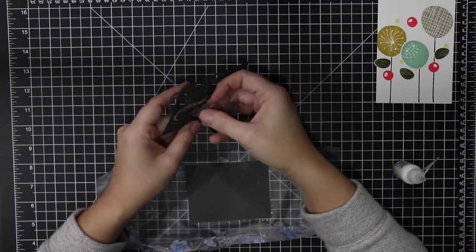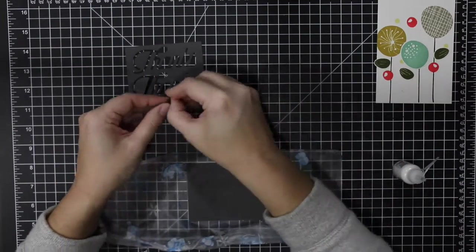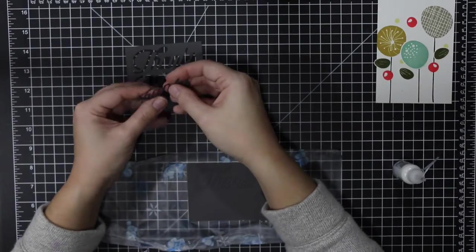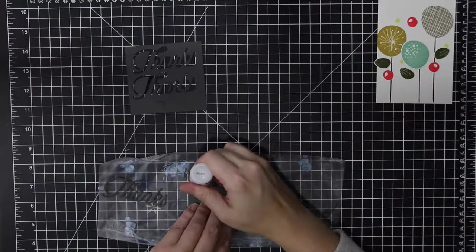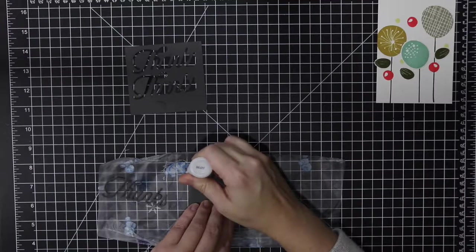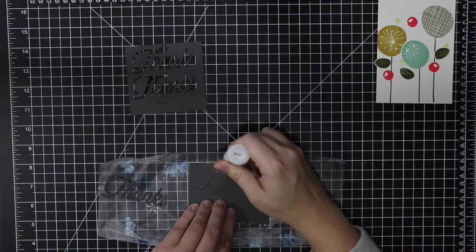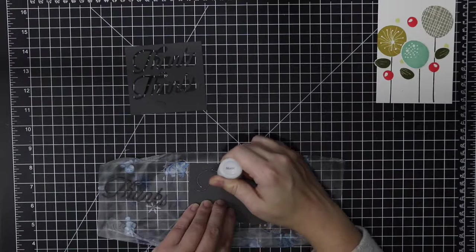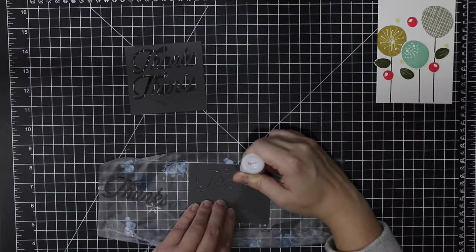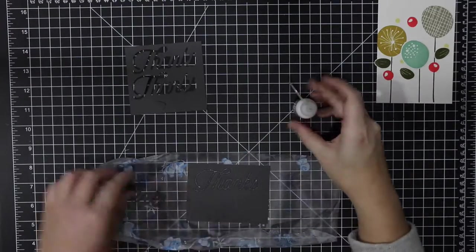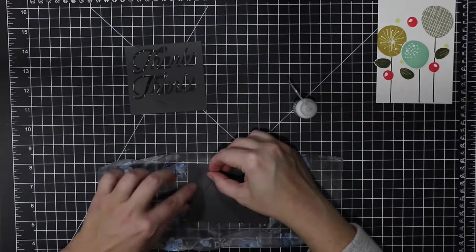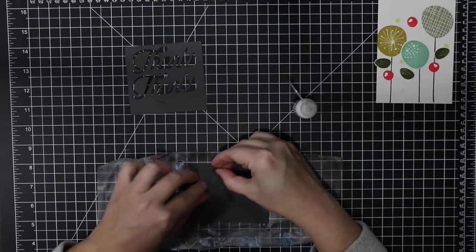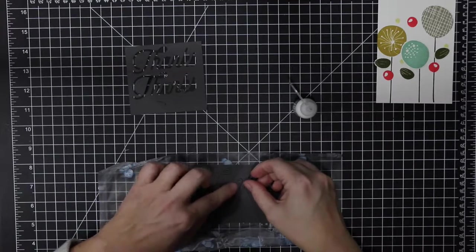I've die cut the Thanks die four times from Tailored Expressions poppy seed cardstock. That's the same ink that I used for the stems. I'm using a piece of press and seal to keep everything adhered to the surface so that I can put some multi-medium mat and layer these die cuts together. It takes some finagling.